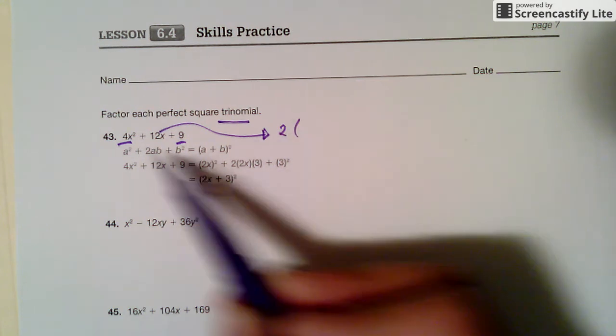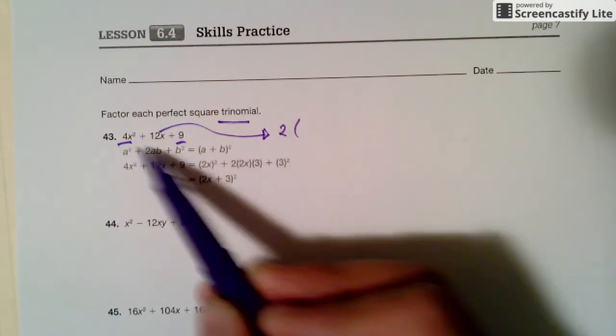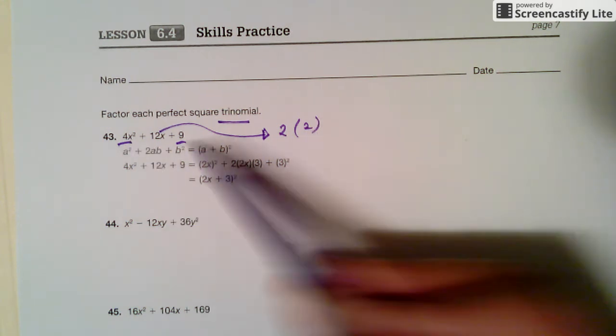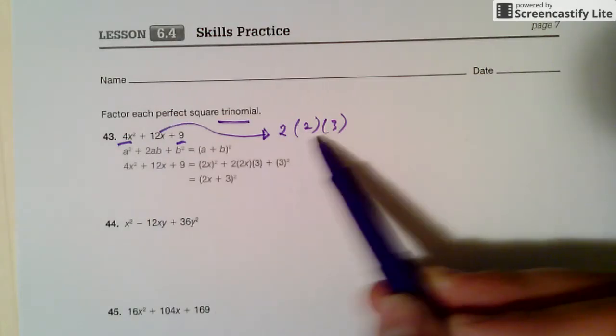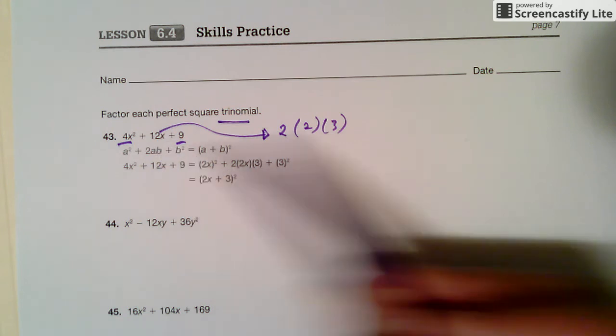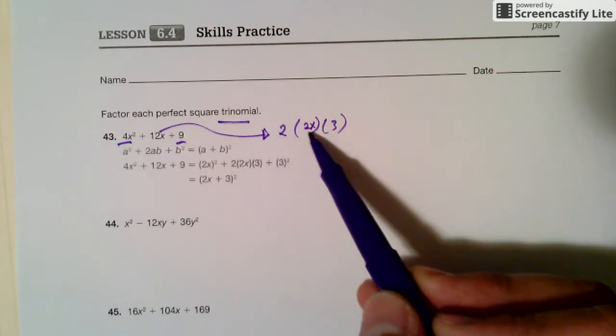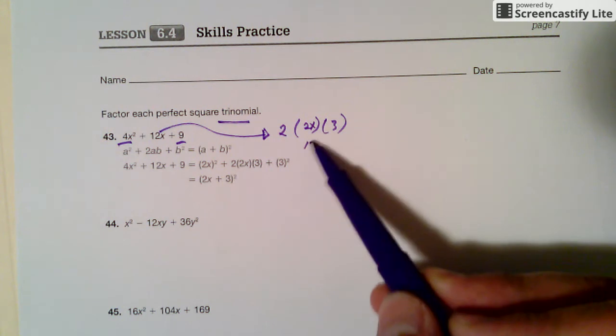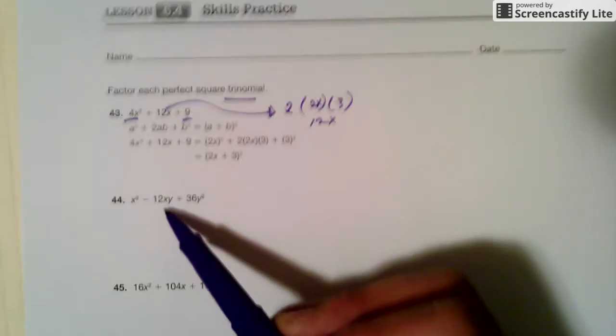And there's always a two, and then you're just going to multiply the square root of four, which is two, and then the square root of nine, which is three. And then that needs to look like that piece right there. So it's two times two, which is four. Nine times three is 12, so this is actually 12x. So we'll try it for 44.